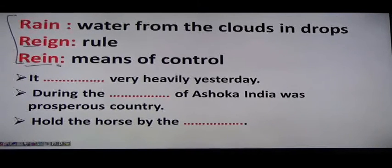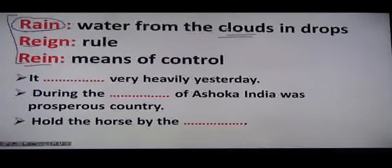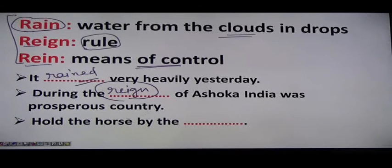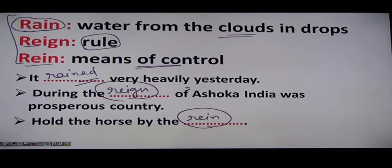Next three words: rain (R-A-I-N) is water from clouds in the form of drops. Reign (R-E-I-G-N) means to rule. Rein (R-E-I-N) is a means of control. Examples: 'It rained very heavily yesterday.' 'During the reign of Ashoka, India was a prosperous country.' 'Hold the horse by the rein.'